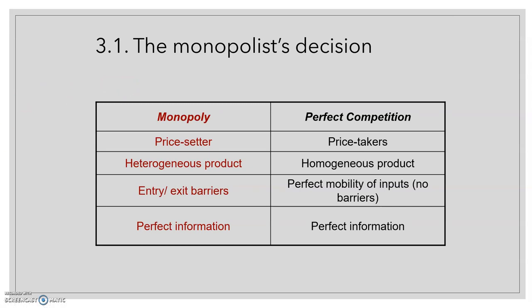We are going to compare the monopoly with a situation of perfect competition. In perfect competition, both consumers and producers are price takers, because there are many consumers and producers in the market so none of them has market power. In the monopoly, the firm is going to be a price setter, although it will have some restrictions. Also, the product in perfect competition is a homogeneous product — all producers sell exactly the same product with no differentiation — whilst in a monopoly the product is going to be heterogeneous.